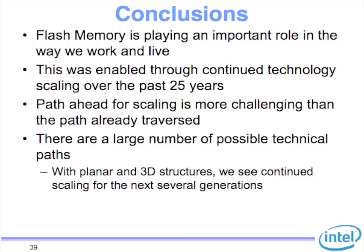So that's pretty much all I had. Flash memory is playing a very important role in the way we live and work, from phones to SSDs and every which way. This has been enabled through continued technology scaling over the past years. The path ahead is more challenging — we are already looking at drastic material changes and now structural changes as well. There are a large number of possible technical paths. At a high level, with the planar cell followed by 3D structure, we do see NAND scaling going on for several more generations. There is a red brick wall, but we keep pushing it further and further away.